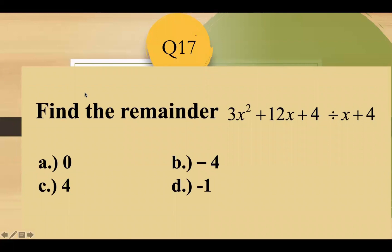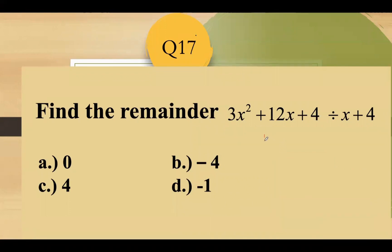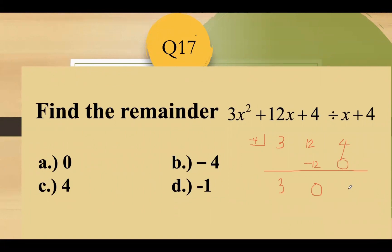Question number 17: find the quotient of 3x squared plus 12x plus 4 divided by x plus 4. Using synthetic division with divisor negative 4: list coefficients 3, 12, 4. Bring down 3; 3 times negative 4 is negative 12; add to get 0; 0 times negative 4 is 0; add to get 4 as remainder. So the quotient is 3x with remainder 4. Answer: letter C.